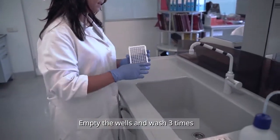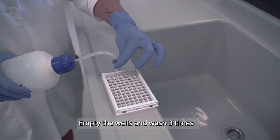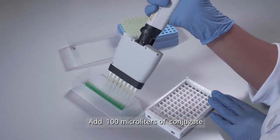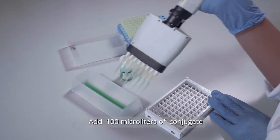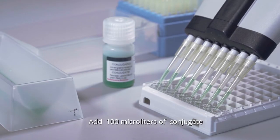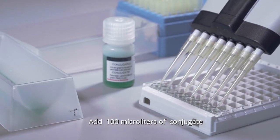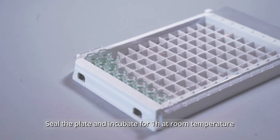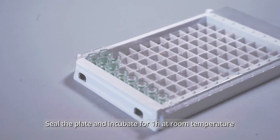Empty the plate and repeat the washing step three times. Add 100 microliters of conjugate. Seal the plate and incubate one hour at room temperature.